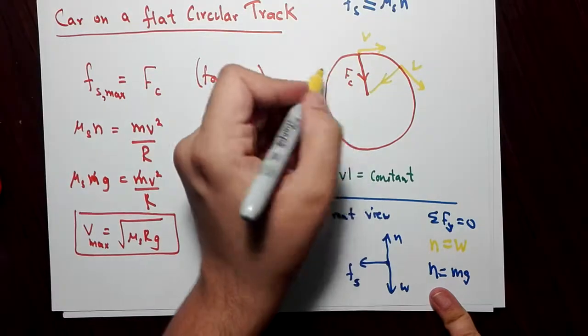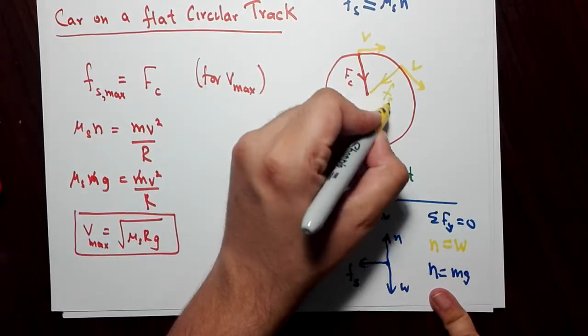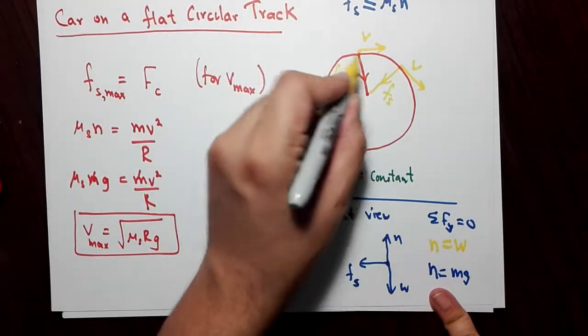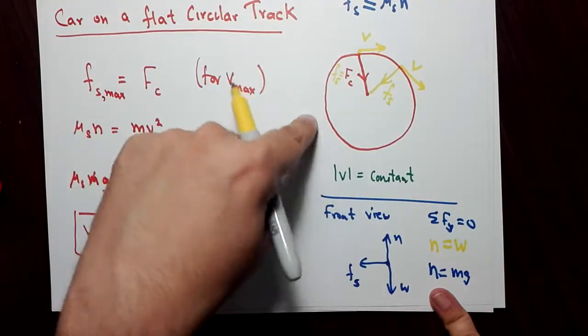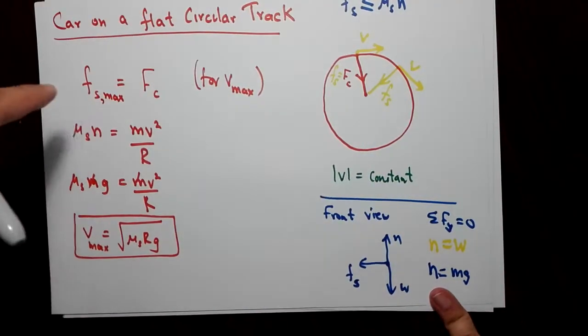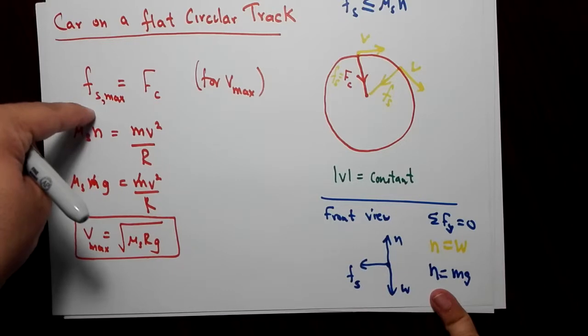So at every point, this force is pulling the car towards the center. And in this case, the static frictional force is the centripetal force that's keeping this car in the circular path. And again, remember, we want the limiting speed. For the limiting speed, you want the static frictional force to be maximum.